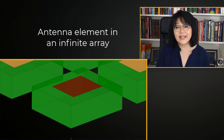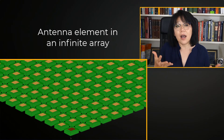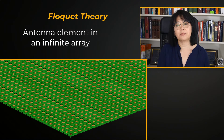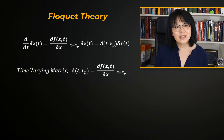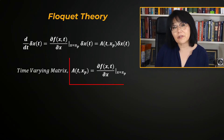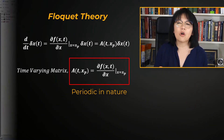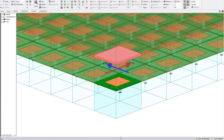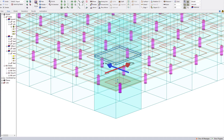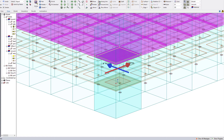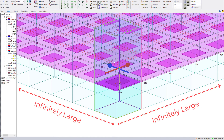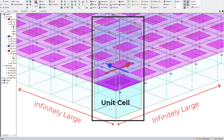In order to understand antenna array behavior, it's necessary to understand the antenna's behavior in an infinite array — and that's where Floquet theory comes into play. Floquet theory is an area of mathematics that deals with differential equations with periodic coefficients. When applied to a large electromagnetic periodic structure such as an array of antenna elements, an FSS, a feed array, or a radome, Floquet theory can be applied to idealize the structure as infinitely large and analyze it using a unit cell.